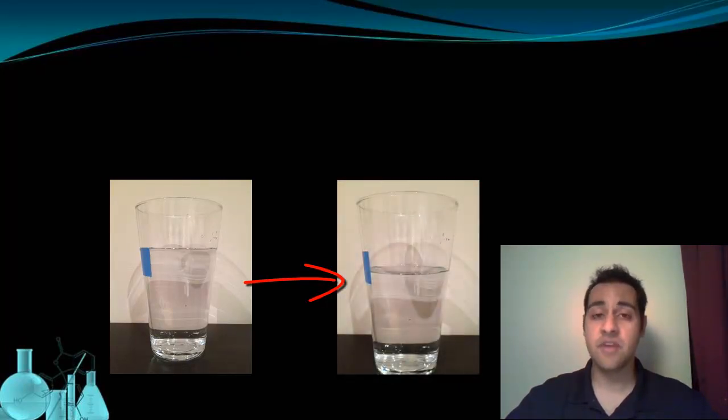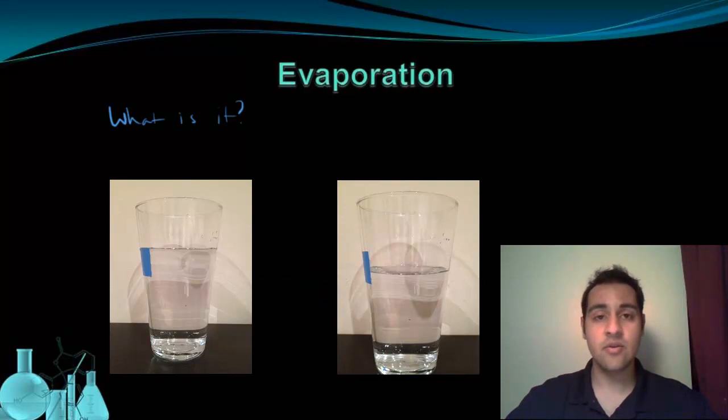However, if you take a cup of water, such as this one, and you leave it out for a few days at normal temperature, you'll also see the water level come down. We call this phenomenon evaporation, but what exactly is evaporation? We didn't add any heat to that cup of water, and we didn't see any steam coming out of it. So where did the water go, and what is evaporation?